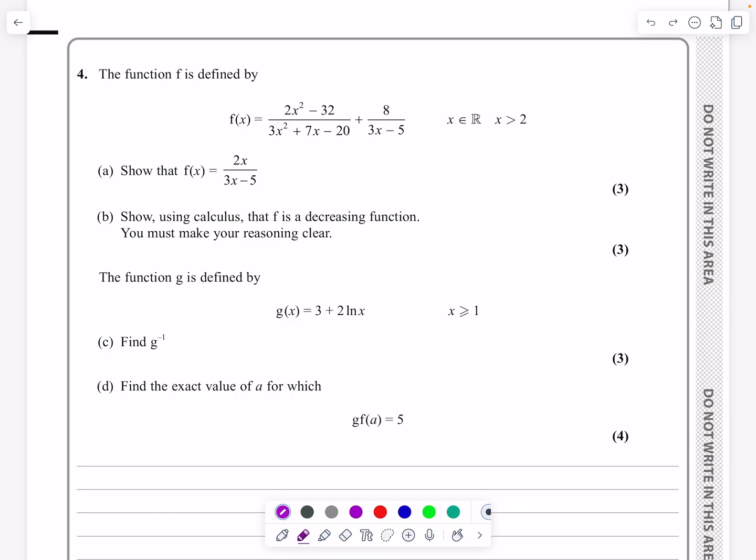Second part, we've got to differentiate, and we're going to be differentiating using the quotient rule. And then we jump into lots of work on functions. We're going to be finding the inverse of a function, the composite of a function, etc. So let's make a start by looking at the first part, which says, can we show that that complicated function there can simplify down to 2x over 3x minus 5?